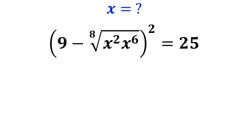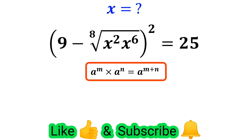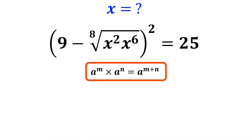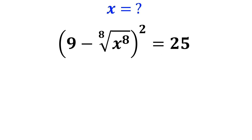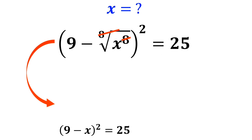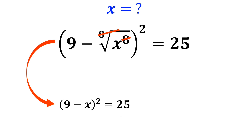Again, based on the same exponent rule we mentioned earlier — a to the power of m times a to the power of n equals a to the power of m plus n — we can rewrite this expression as 9 minus the 8th root of x to the power of 8, all squared, is equal to 25. The power of 8 cancels out with the 8th root, and this expression simplifies to 9 minus x, all squared, is equal to 25.